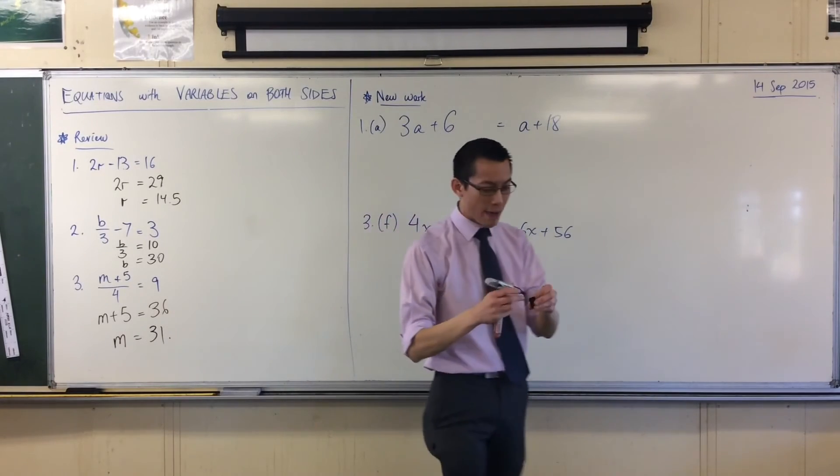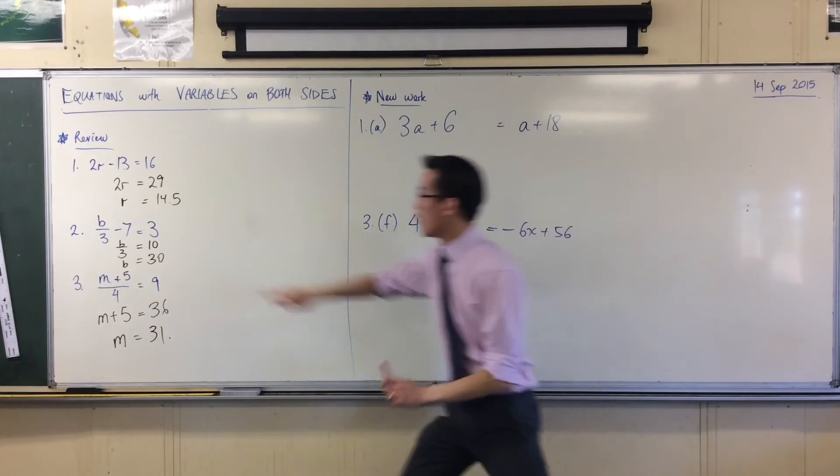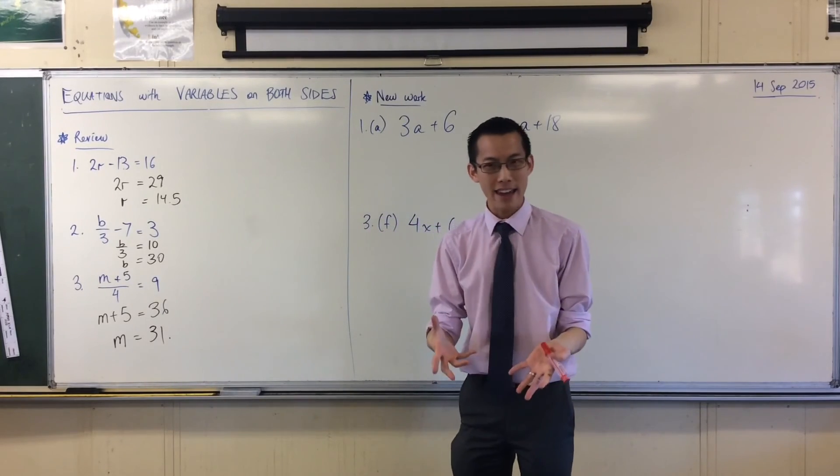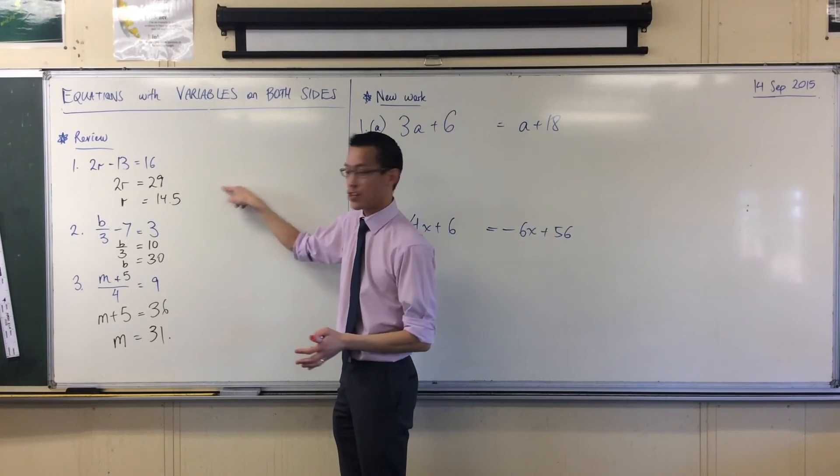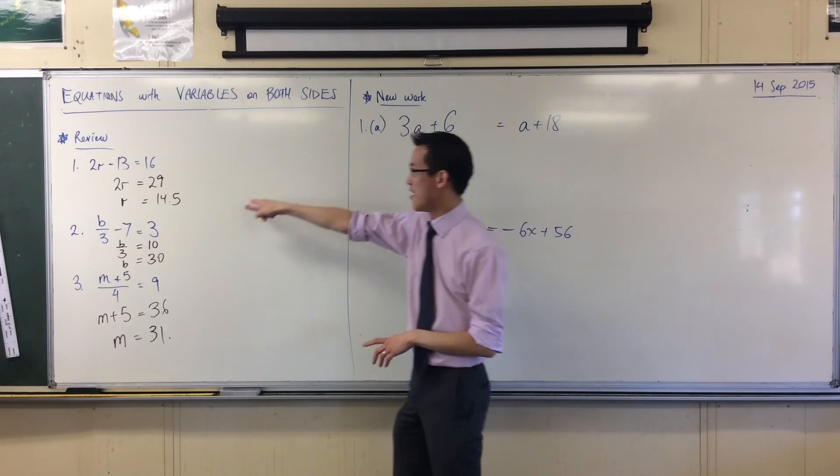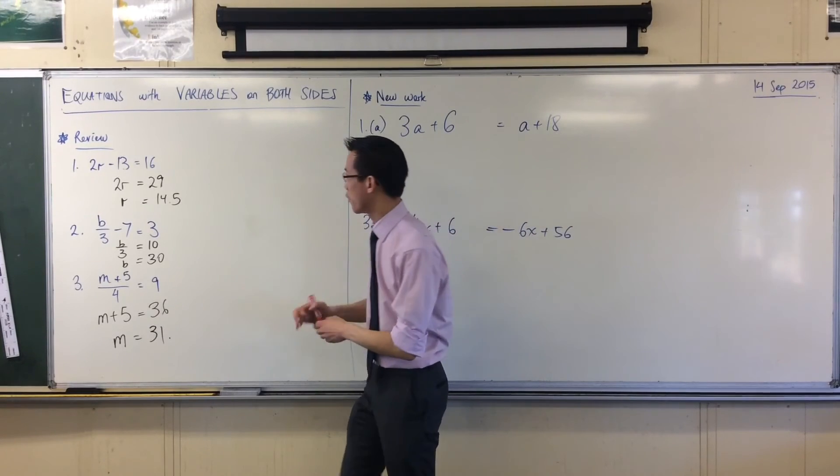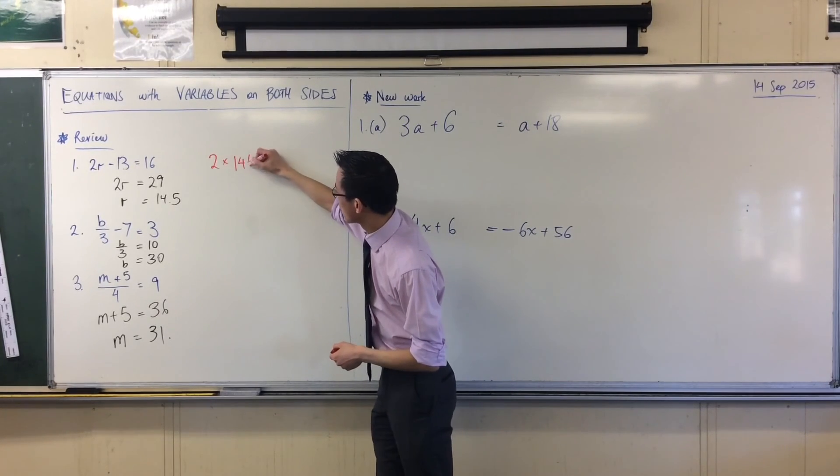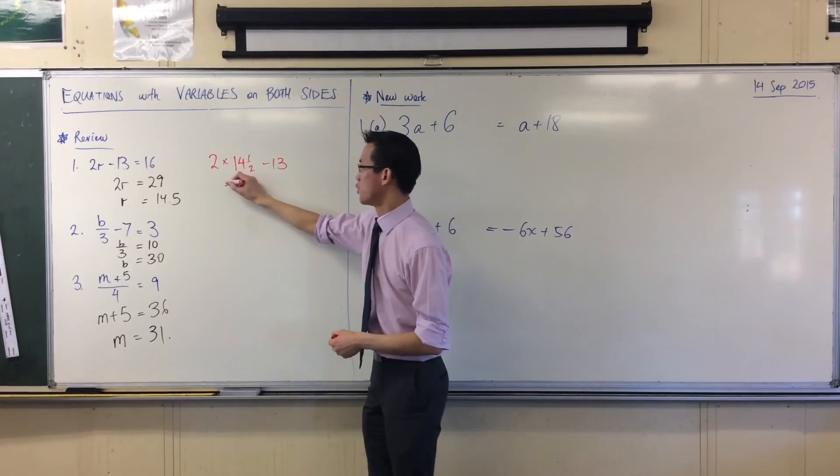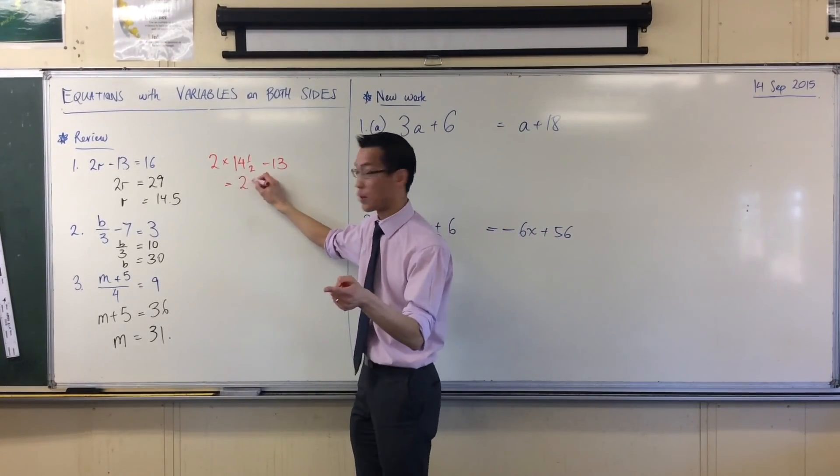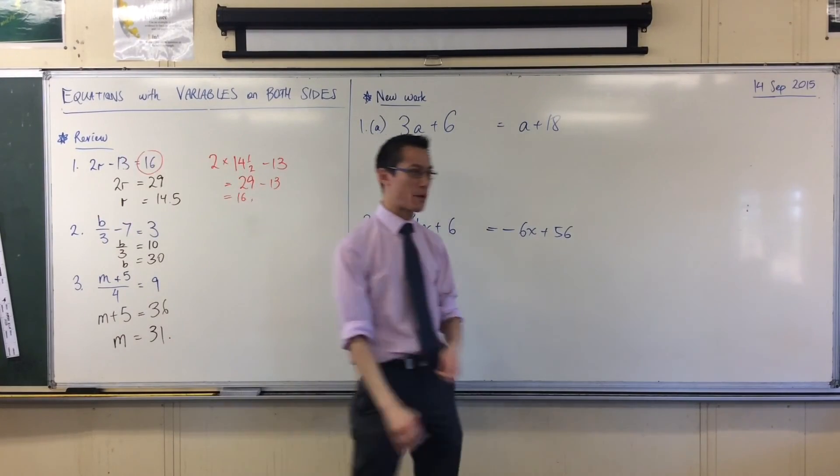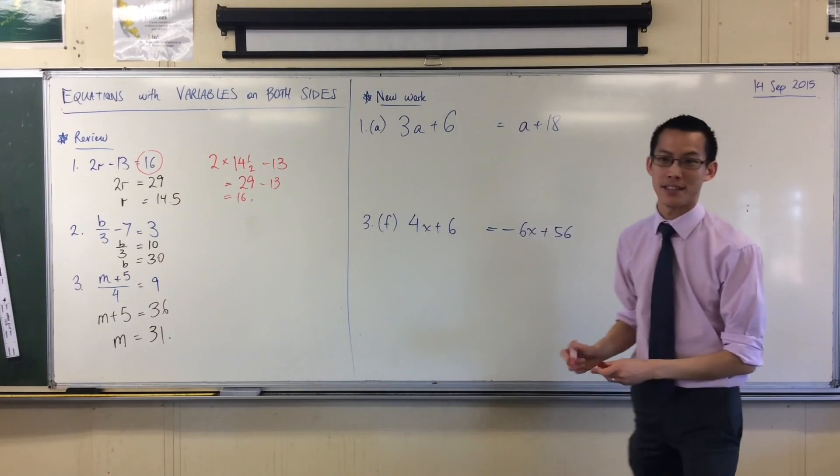Nailed it. And remember, being that we've got 1, 2, 3 solutions, you always know that the solution is right because they should go back into the original equation. For instance, let's just give the first one a go. We said 14 and a half. So if I said 2 times 14 and a half, take away 13. 2 times 14 and a half is 29. You take away 13 and that gives you the 16, which is what we're expecting. Thumbs up, it works. And you can do it for the second and third ones as well.